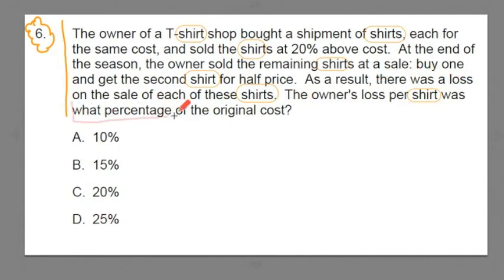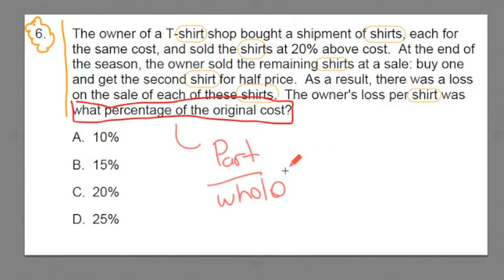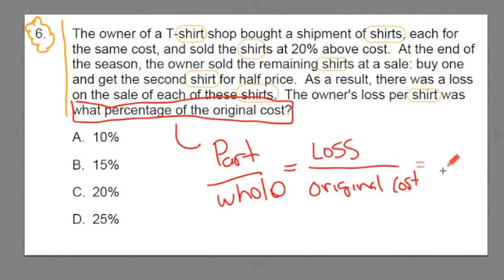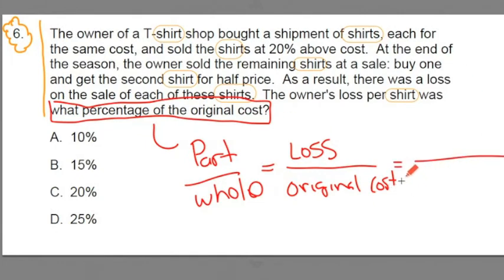The final part says the owner's loss per shirt was what percent of the original cost? What percent of the original cost? This is a part-to-whole question. Part-to-whole. Now, the whole is the original, the original cost. The part is the loss. And we can find this part-to-whole relationship by doing some basic math. We know that the original cost was $100.